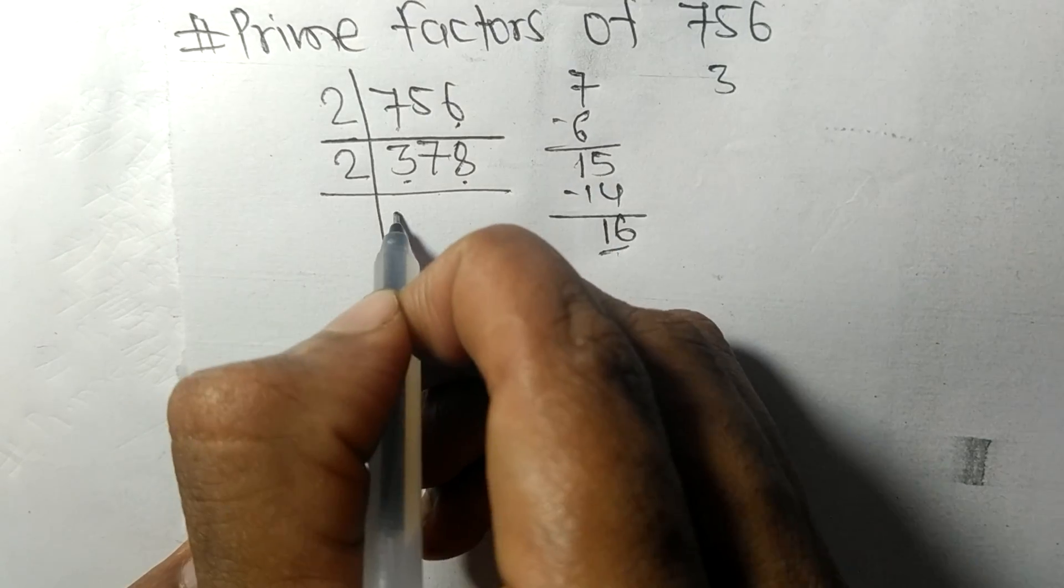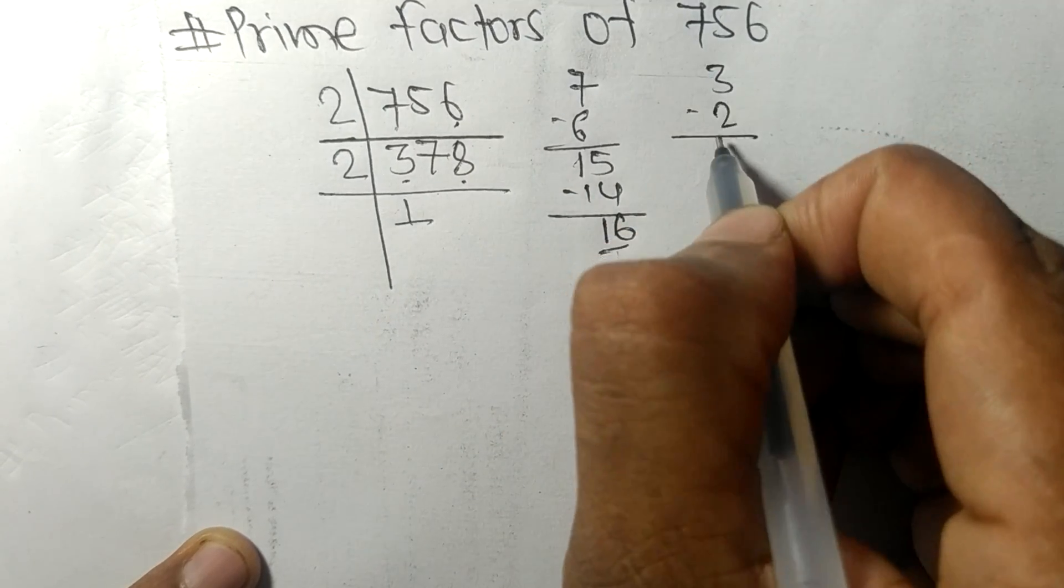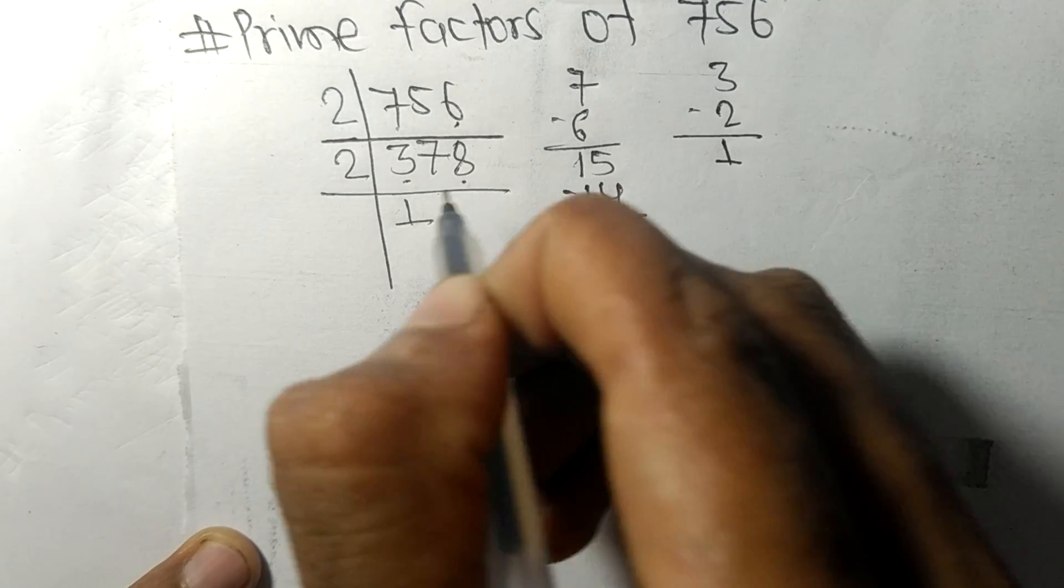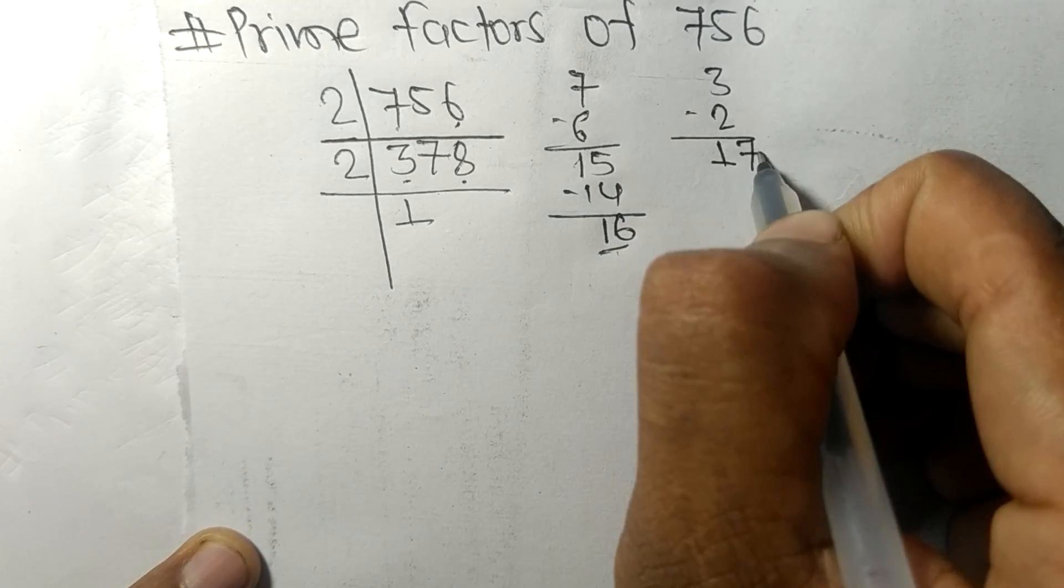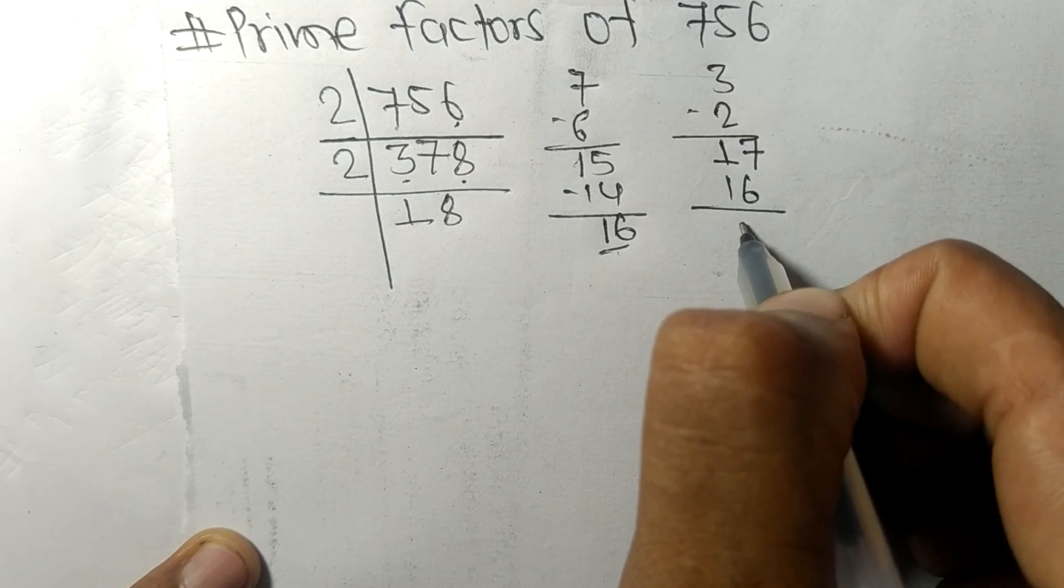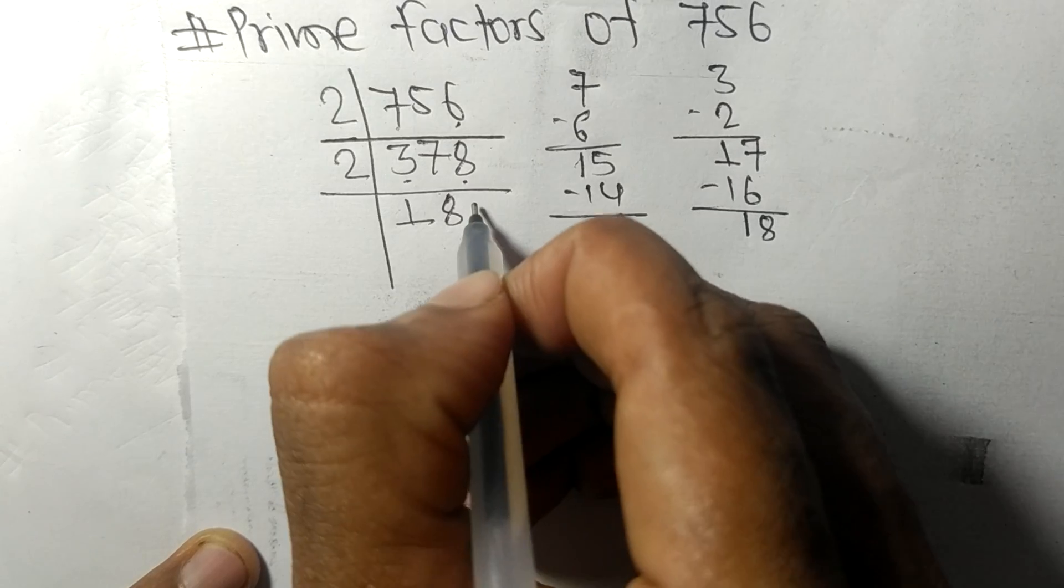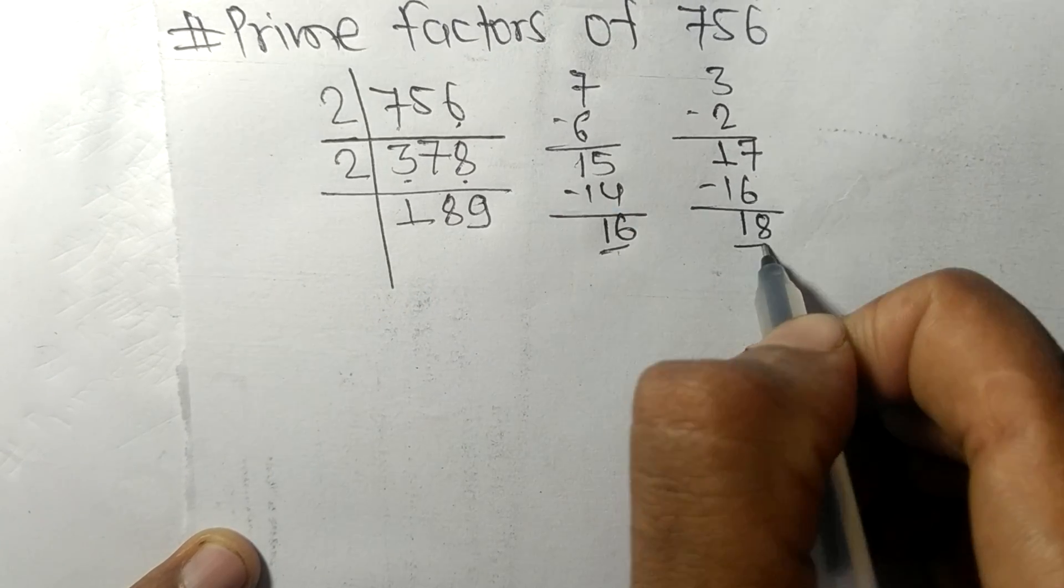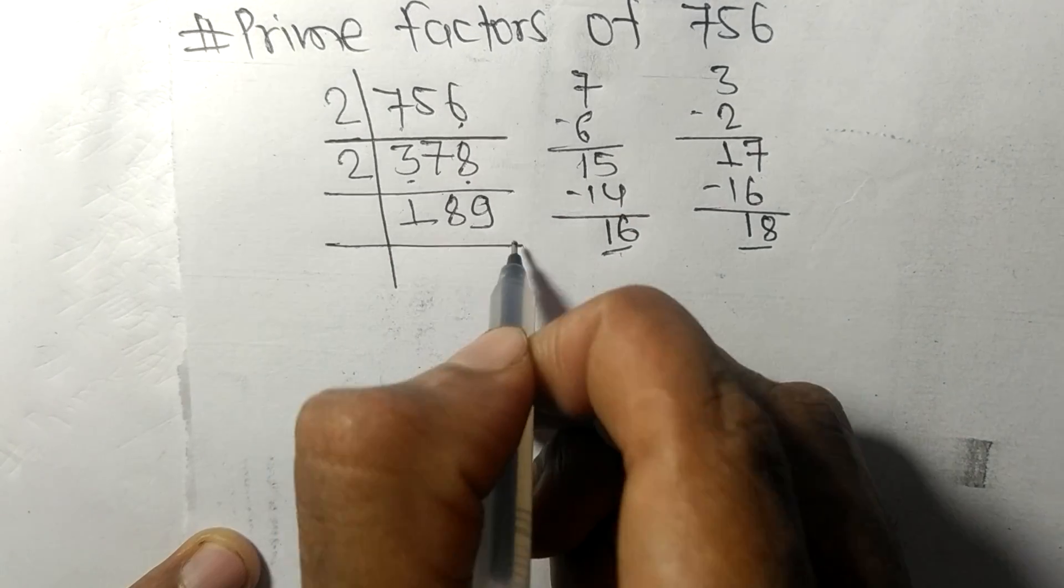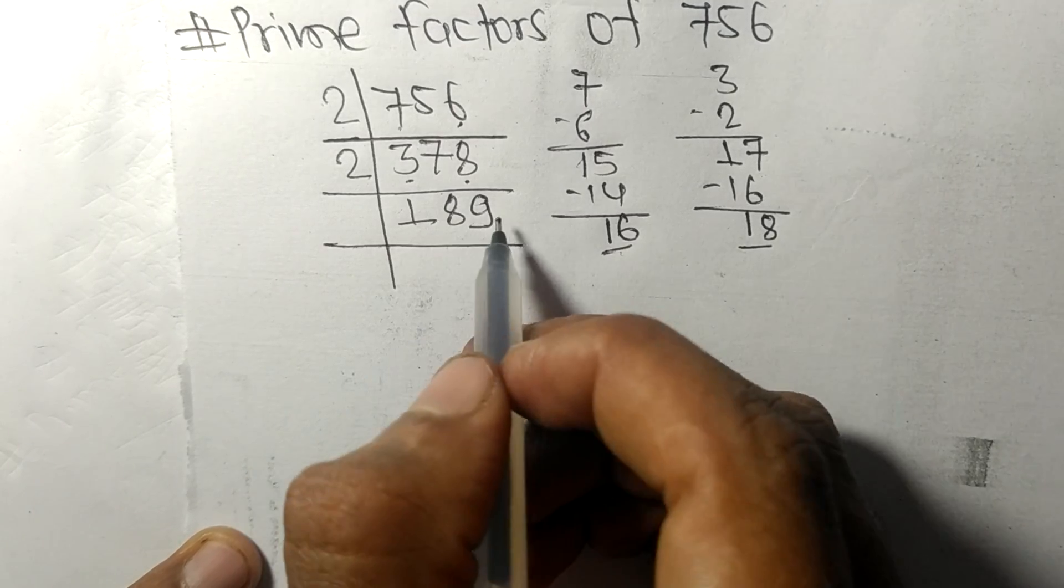Now we got 189 which is exactly divisible by 3. 3 times 6 equals 18, 3 times 3 equals 9. Now 63 is divisible by 3.